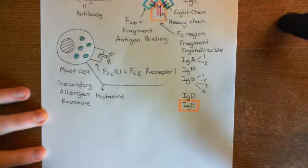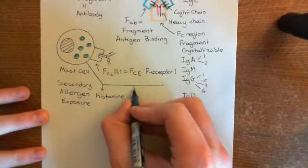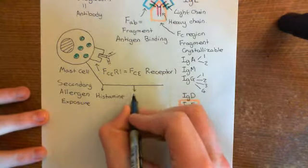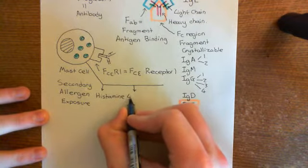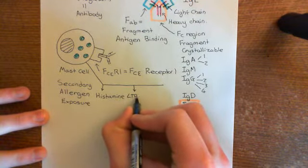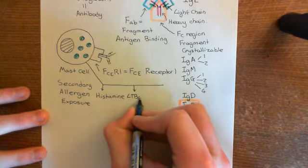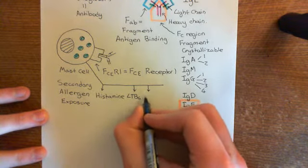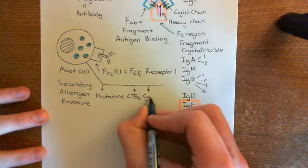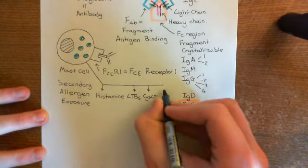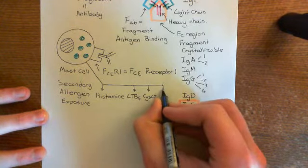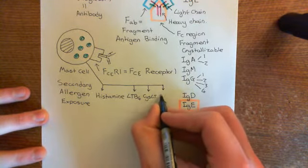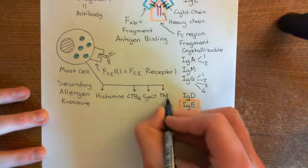Histamine isn't the only pro-inflammatory mediator these mast cells release. They also release leukotriene B4 (LTB4), cysteinyl leukotrienes (CysLT), and tumor necrosis factor alpha.